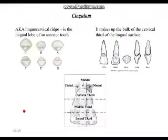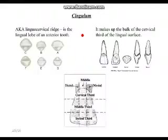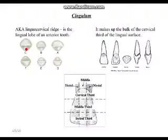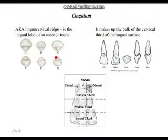To start with the anatomy of the incisors, the first thing you need to know is the cingulum. Cingulum is singular; cingula is plural. The cingulum is a lingual cervical ridge — it's the lingual lobe of an anterior tooth, located on the lingual surface. It's like a little curvature on the back — bulky and bulging.